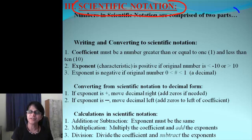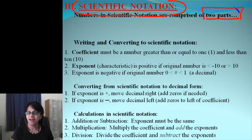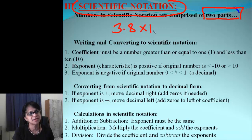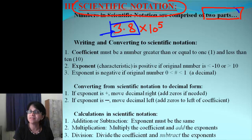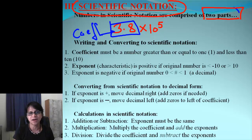In Scientific Notation, there are mainly two parts. Let's take an example: 3.8 times 10 to the 5th. The first part, 3.8, is called the Coefficient. And then the second part, 10 to the 5th, is called the Exponent.